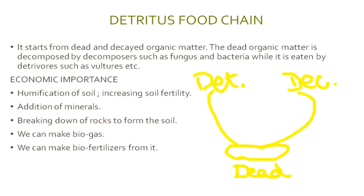The detritus food chain starts from dead and decayed organic matter. The dead organic matter is decomposed by decomposers such as fungus and bacteria, while it is eaten by detritivores. Decomposers include fungus or bacteria, and detritivores that eat this dead matter include rats, eagles, crow, vultures, earthworms, etc.